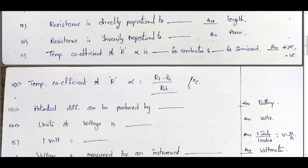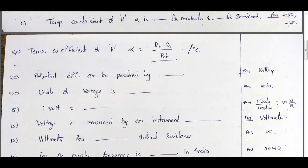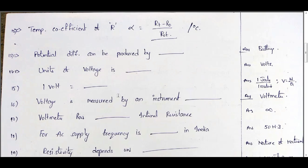Potential difference, or voltage, can be produced by a battery. Units of voltage are volts. 1 volt equal to dash — voltage V equal to W by Q, where W is work in joules and Q is charge in coulombs. So 1 volt equal to 1 joule per 1 coulomb.